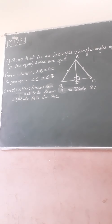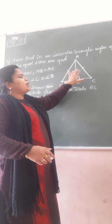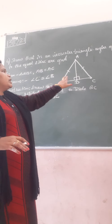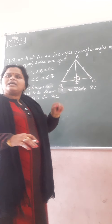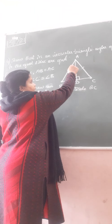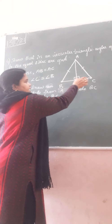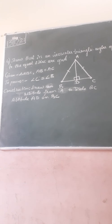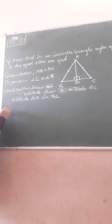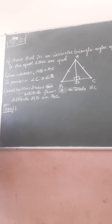Now, what are you observing? There are two triangles now. Can we show some congruency in these two triangles? Yes, we can show congruency in these two triangles. Let me show this congruency by taking the two triangles together.